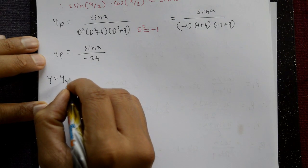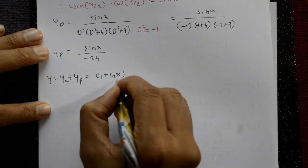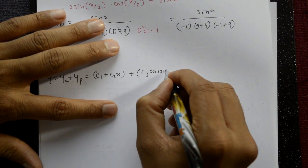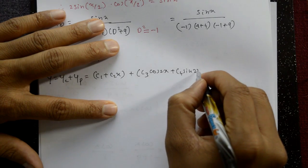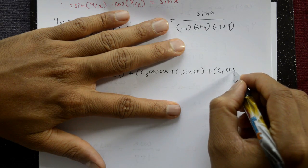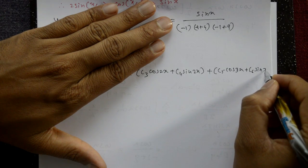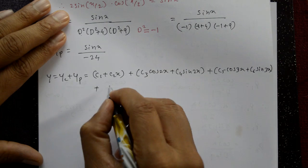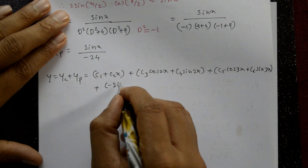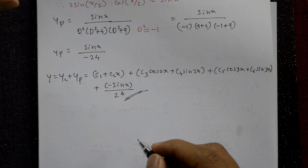The general solution is y equals yc plus yp. Writing the complementary function: c1 plus c2·x plus c3·cos(2x) plus c4·sin(2x) plus c5·cos(3x) plus c6·sin(3x), plus the particular integral. Note the sign is minus, so minus sin(x) by 24. This is the required complete solution.